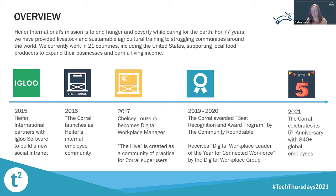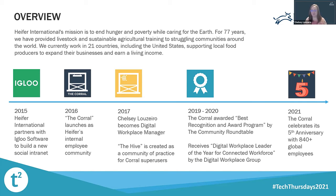Heifer International's mission is to end hunger and poverty while caring for the earth, and we've done that for more than 77 years. We've provided livestock and sustainable agricultural training to struggling communities around the world — we work in 21 countries, including the United States, to support local food producers to expand their businesses so they can earn a living income. A living income means a decent standard of living — sending kids to school, decent housing and clothing — a dignified life. I have enjoyed working for Heifer for eight years and hope to continue for much longer.